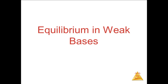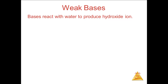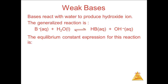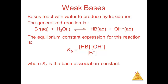Equilibrium in weak bases. Bronsted bases accept protons in a process called hydrolysis, producing OH-. The general reaction for hydrolysis is B- plus H2O in equilibrium with HB plus OH-. The equilibrium expression is KB equals the concentration of HB times the concentration of OH- over the concentration of B-, where KB is the base hydrolysis constant. B stands for base.